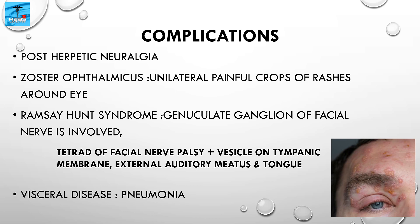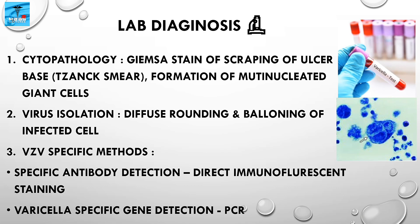Visceral diseases, especially pneumonia, can occur and this is the most common cause of death in zoster patients. Regarding lab diagnosis, it includes cytopathology, virus isolation, and VZV-specific methods. For cytopathology, Giemsa staining of scrapings from the vesicle base reveals cytopathological changes similar to herpes simplex infection, such as formation of multinucleated giant cells — this is the Tzanck smear. For virus isolation, VZV can be isolated in various cell lines, producing cytopathological effects such as diffuse rounding and ballooning of infected cells.